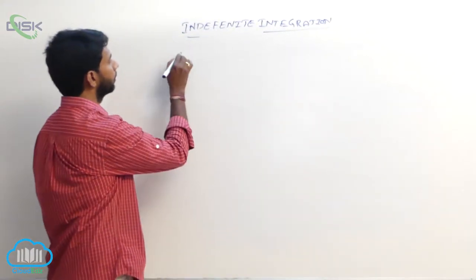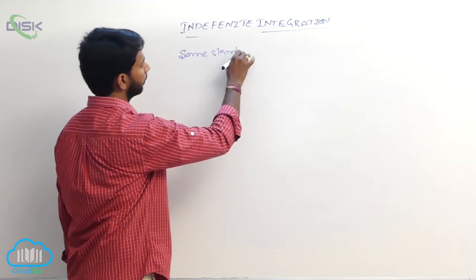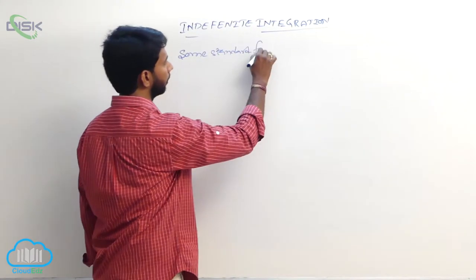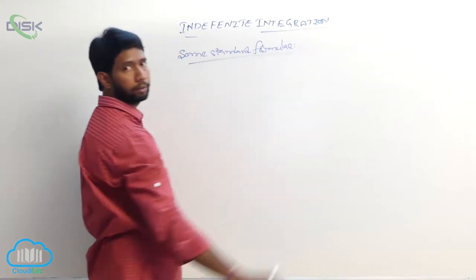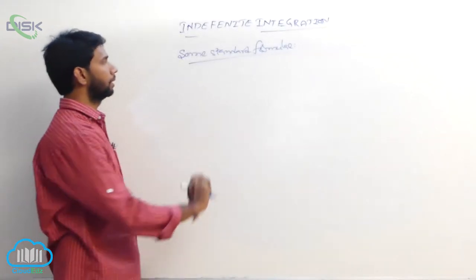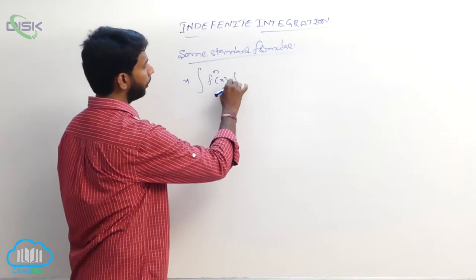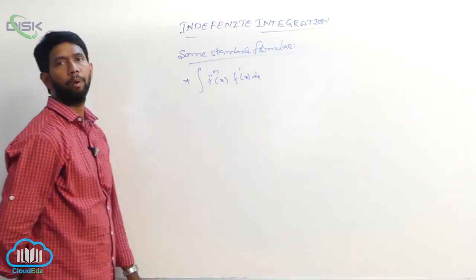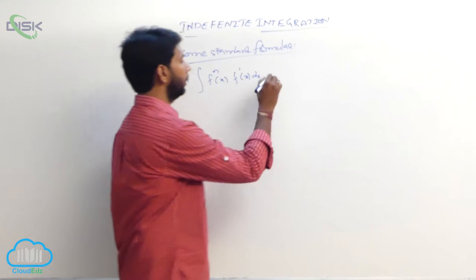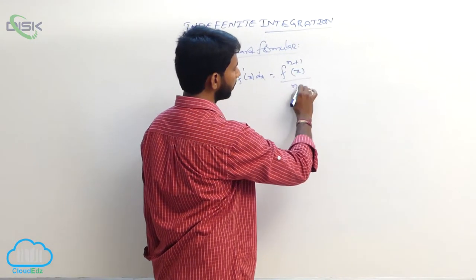Some standard formulas: integral of [f(x)]ⁿ times f'(x) dx equals [f(x)]^(n+1) divided by (n+1) plus constant.